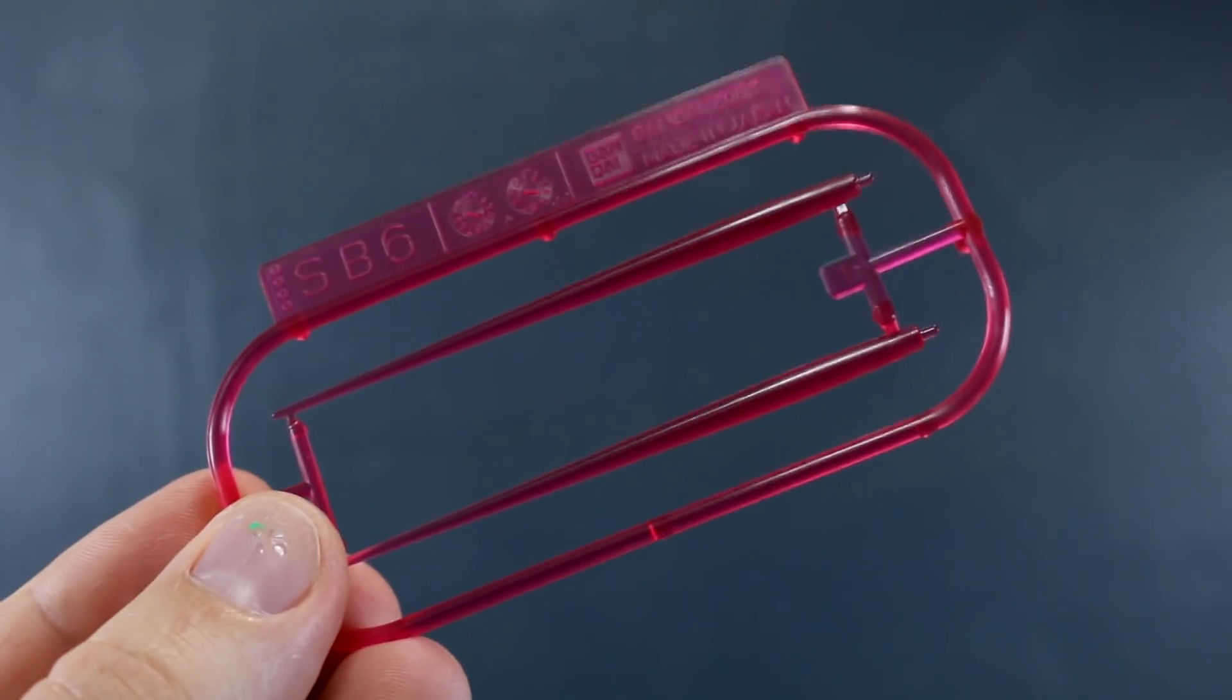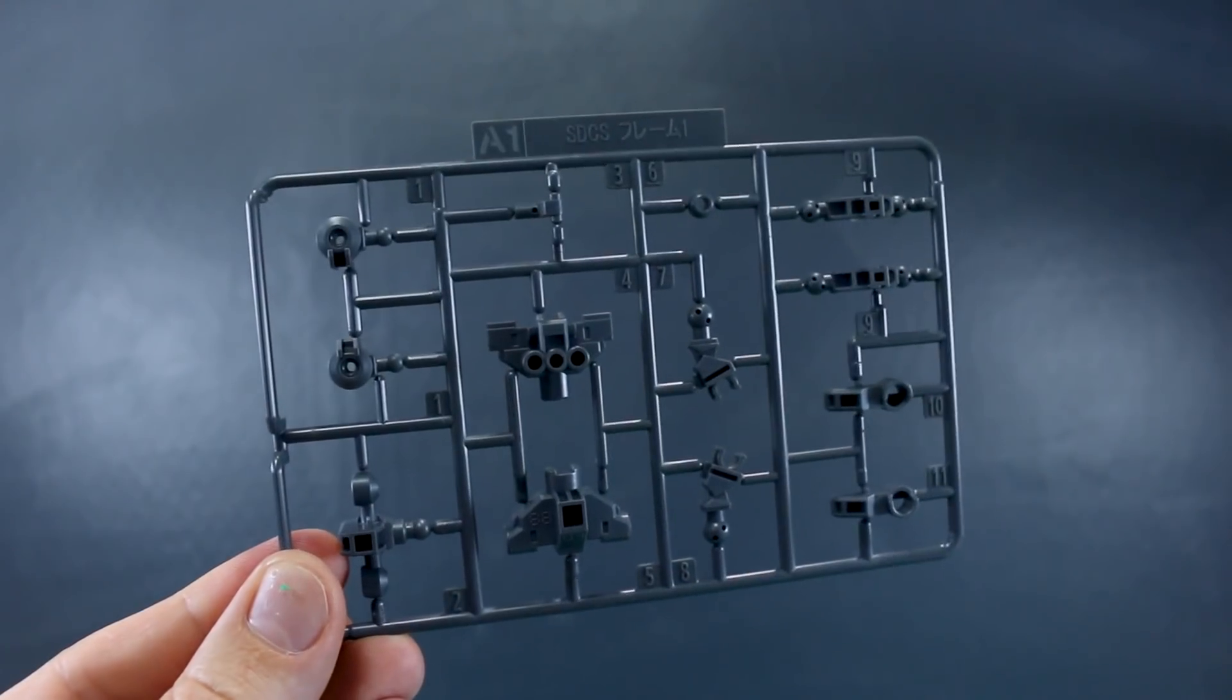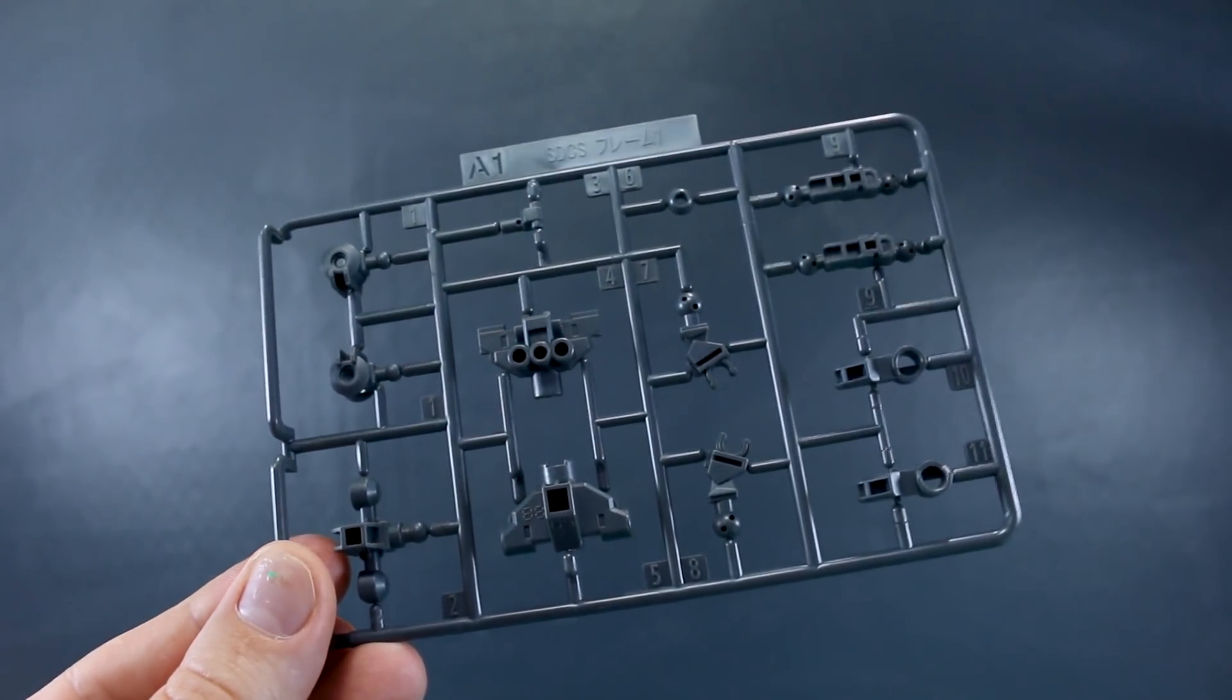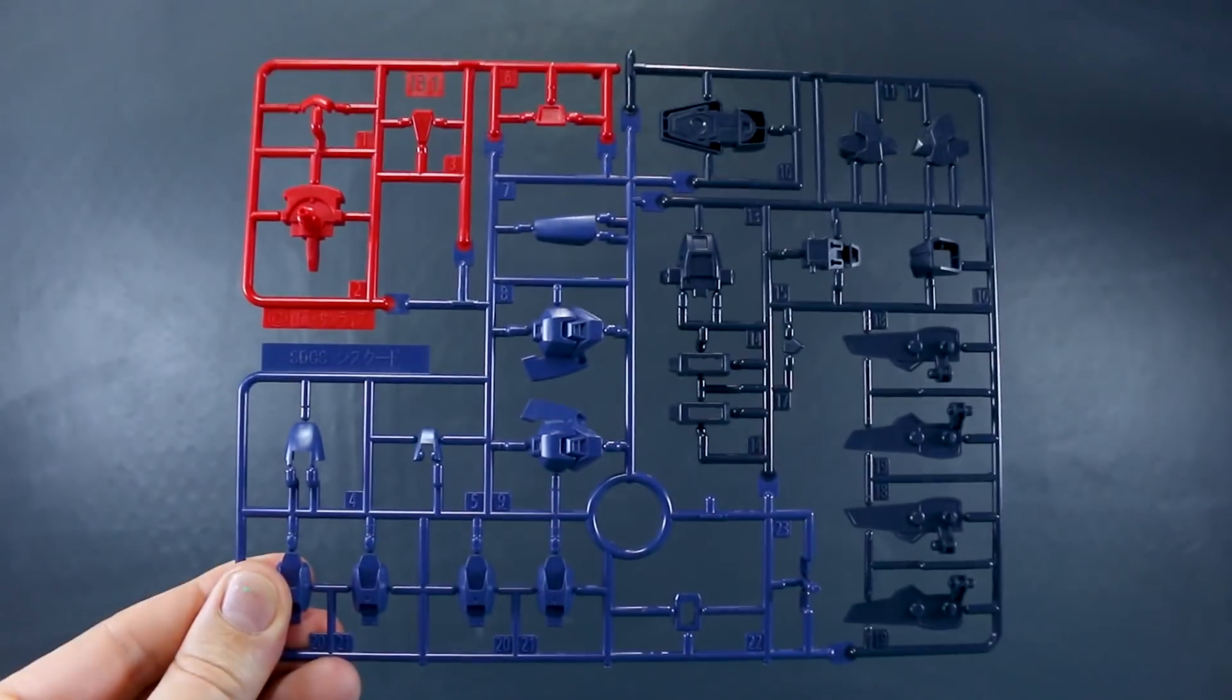Then SB6 for our clear pink beam saber effect parts. And like I said, no poly caps for this kit. So you can just move right on into runner A1 here, which is the SDCS frame one. So this is just all of our regular frame parts for the SD mode here in gray.